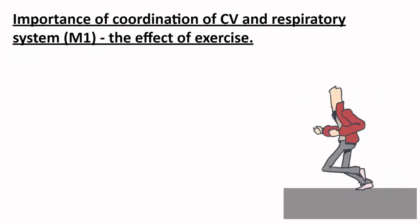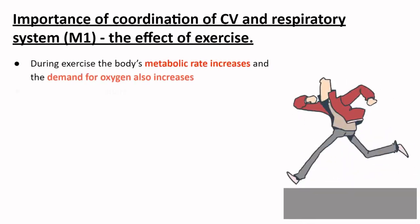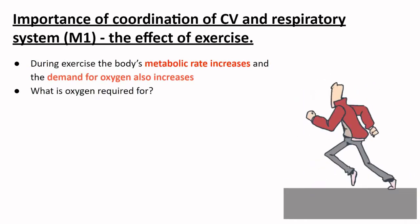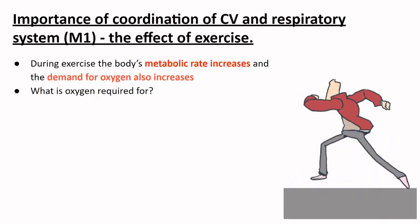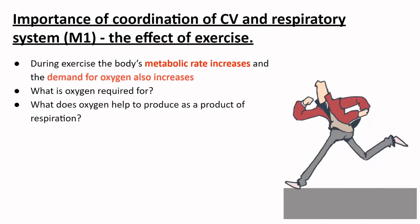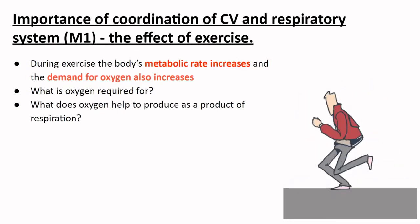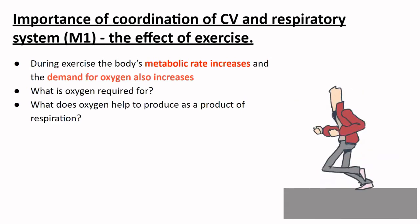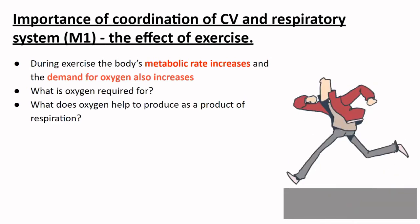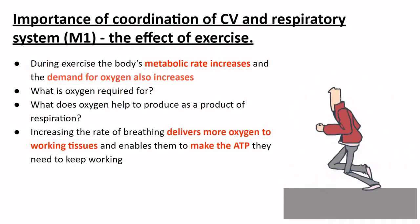During exercise, the body's metabolic rate increases and the demand for oxygen also increases. Oxygen is used up by the body's cells in respiration and carbon dioxide is a byproduct of this process, so as oxygen levels fall, CO2 rises. Oxygen is needed for ATP production, and increasing the breathing rate allows delivery of more oxygen to the muscles, enabling them to make more ATP to keep working.